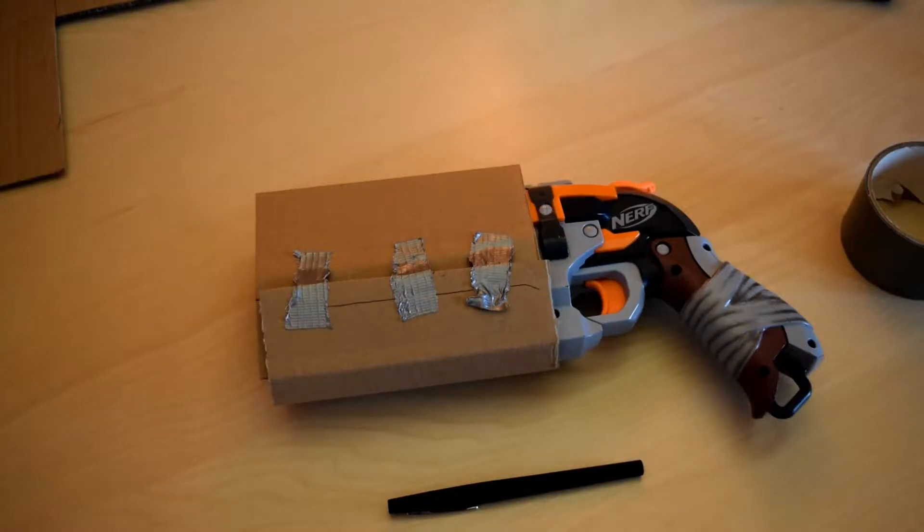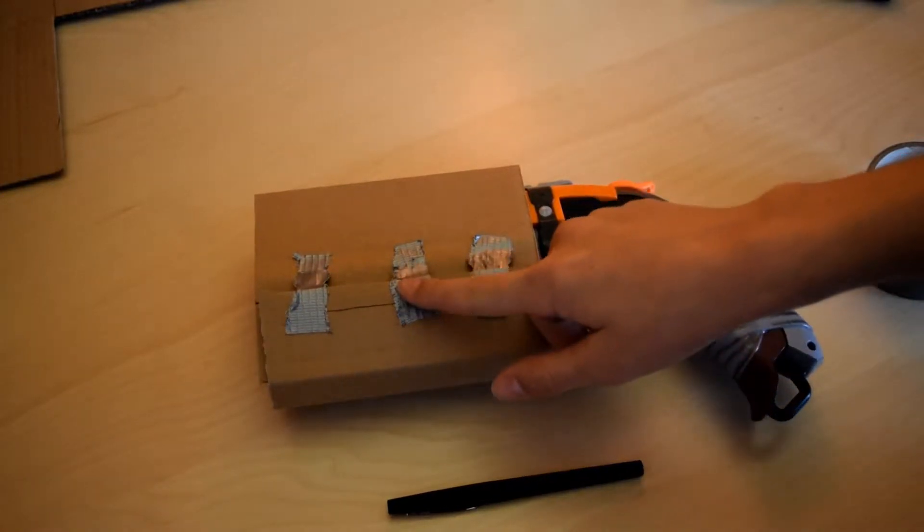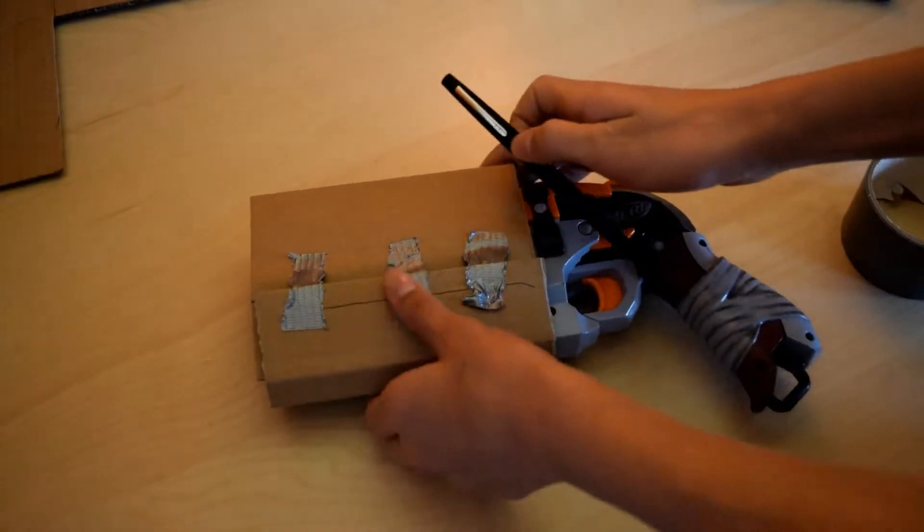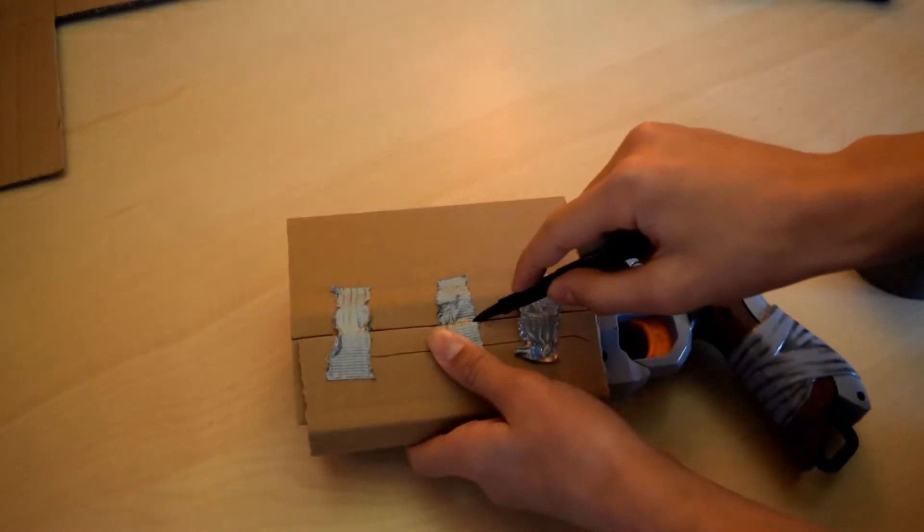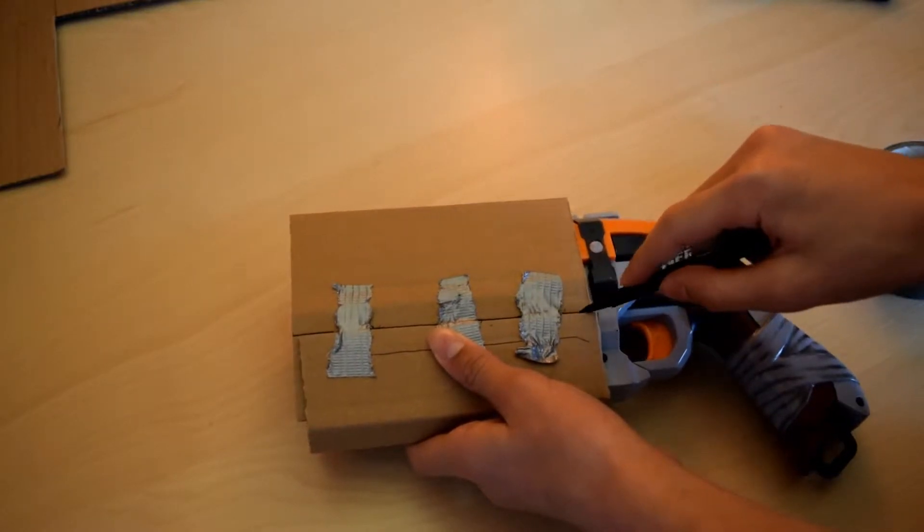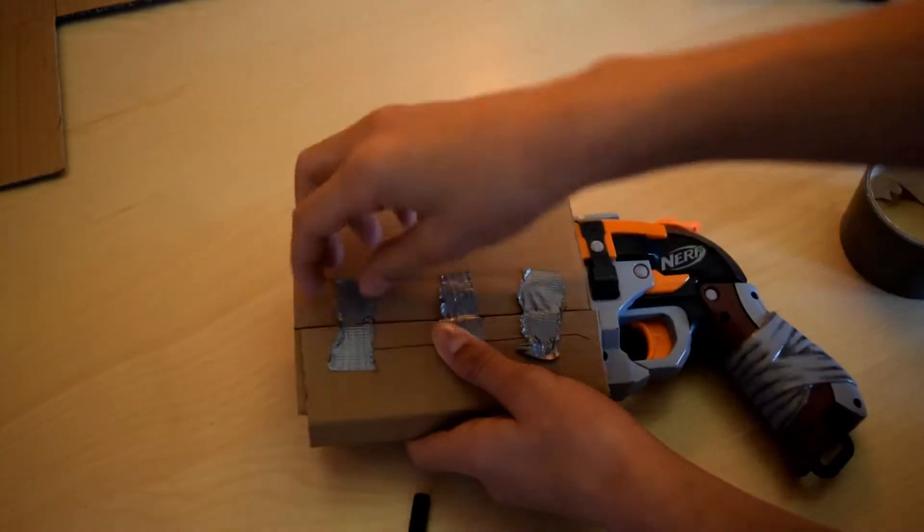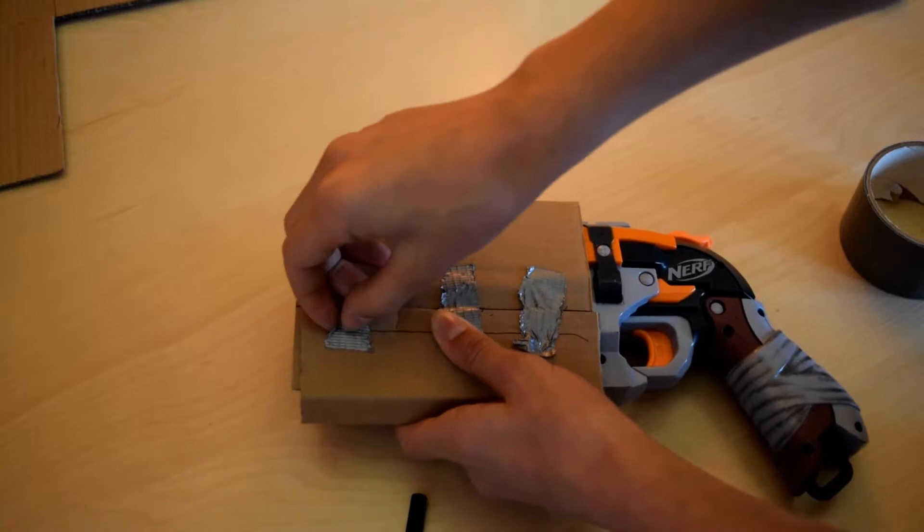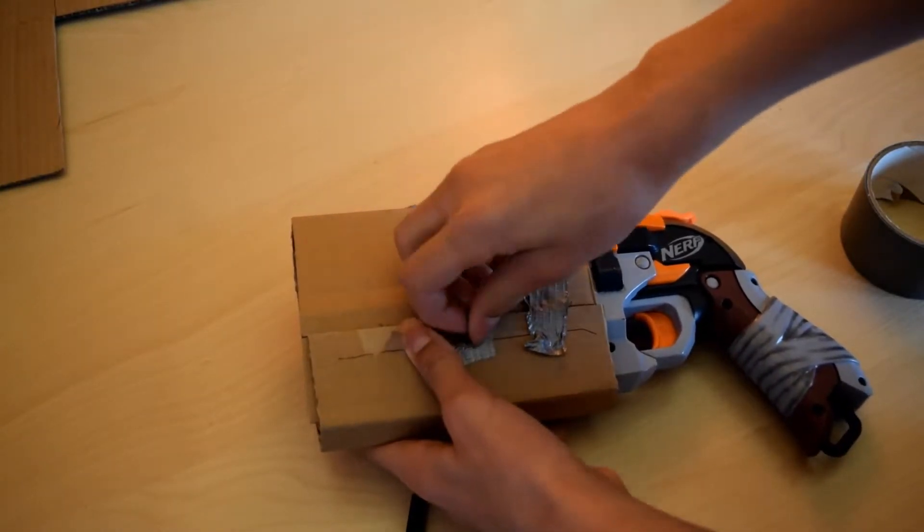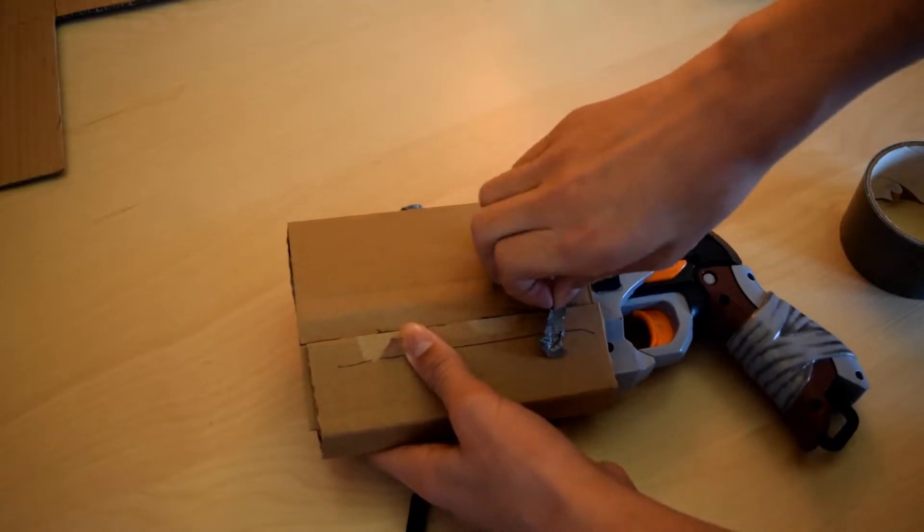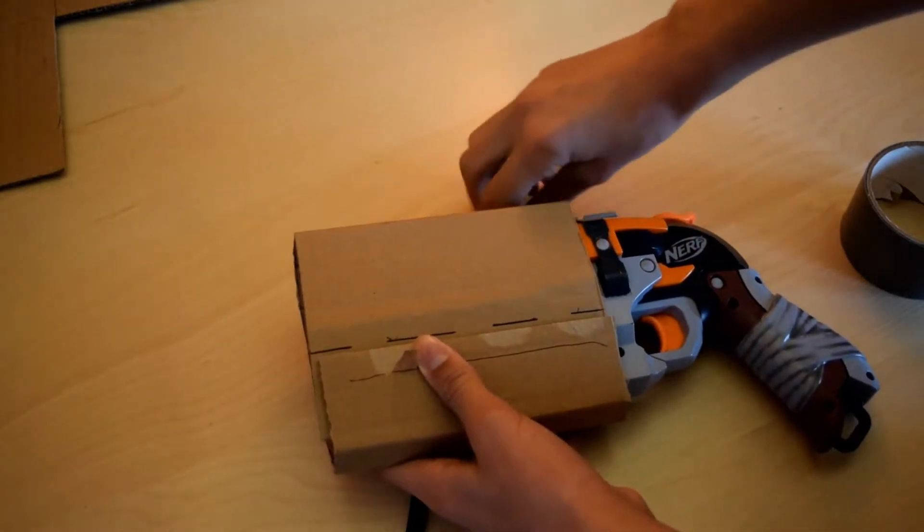Once you've found a tightness you like, use a few small pieces of tape to hold the cardboard together so that you can take your pen or marker and mark along the edges of the cardboard so that you know where to line it up when you hot glue it later. Once you've made your marking, you can remove the tape. If it tears up the cardboard a little bit, don't worry about it, we're going to cover this up later anyway.